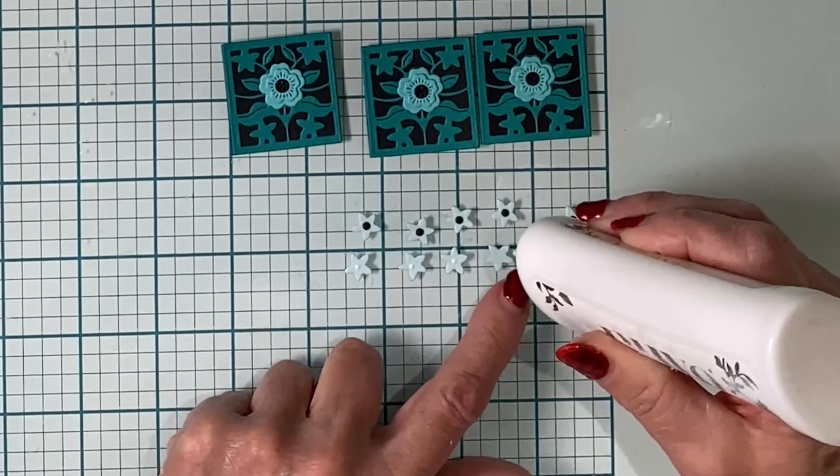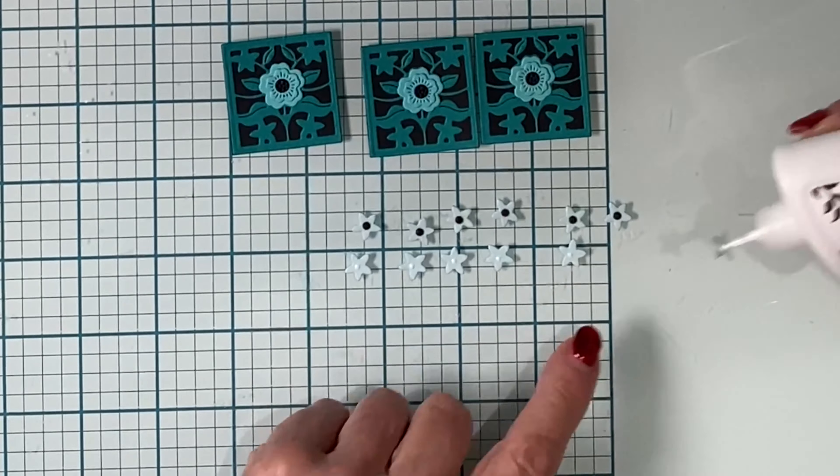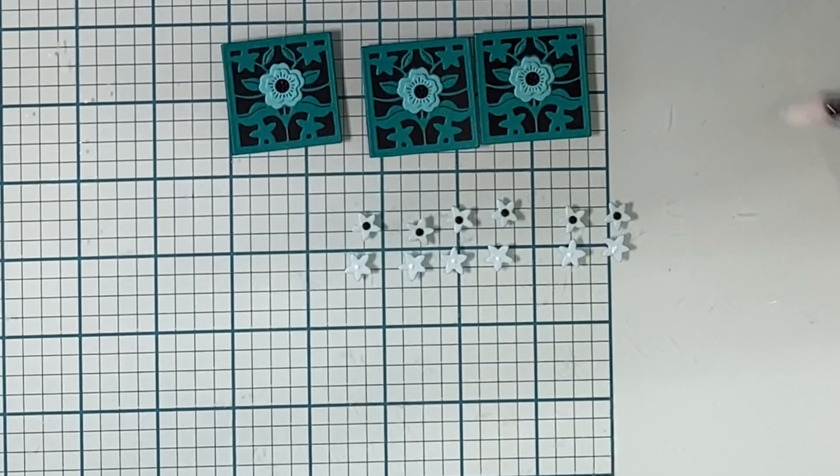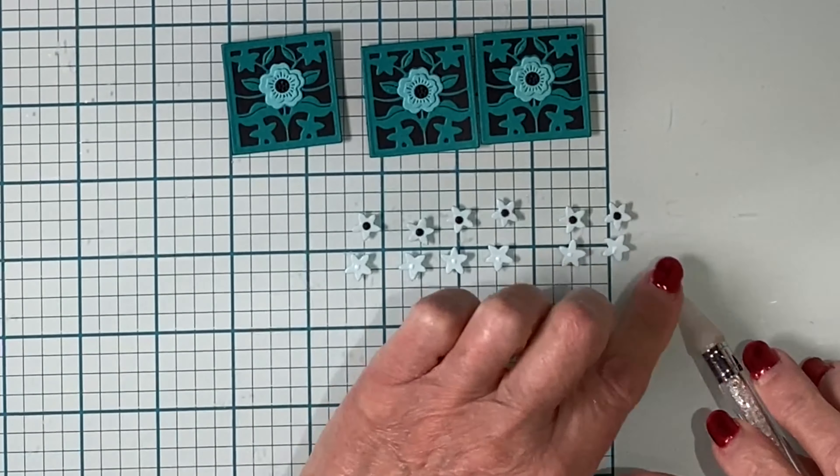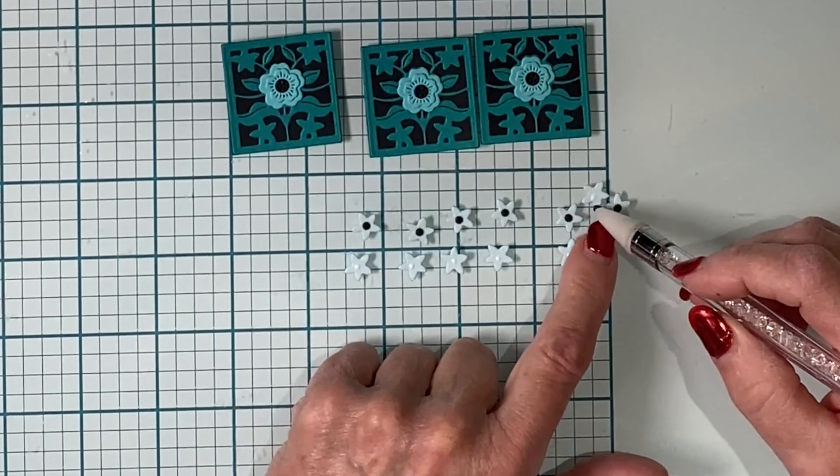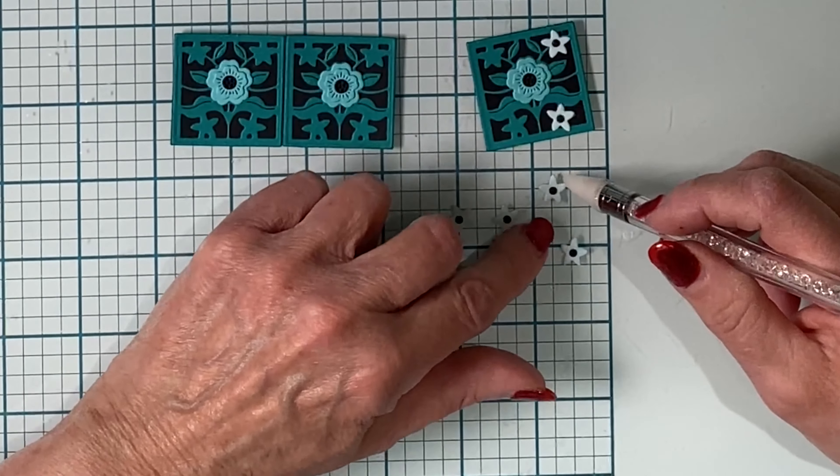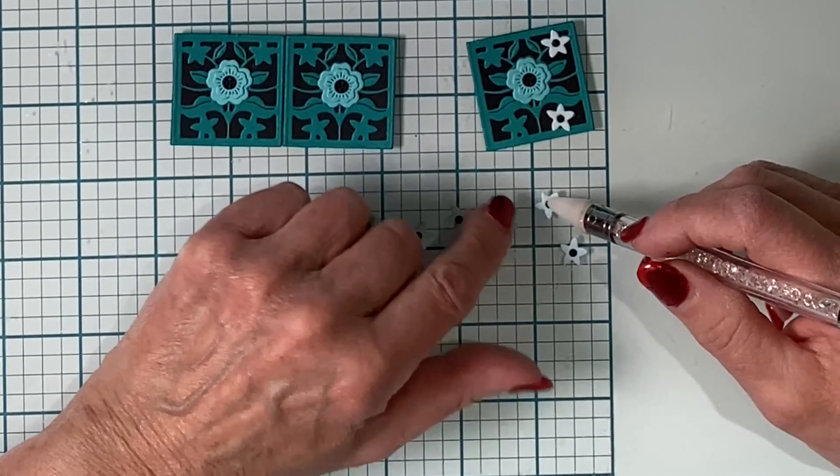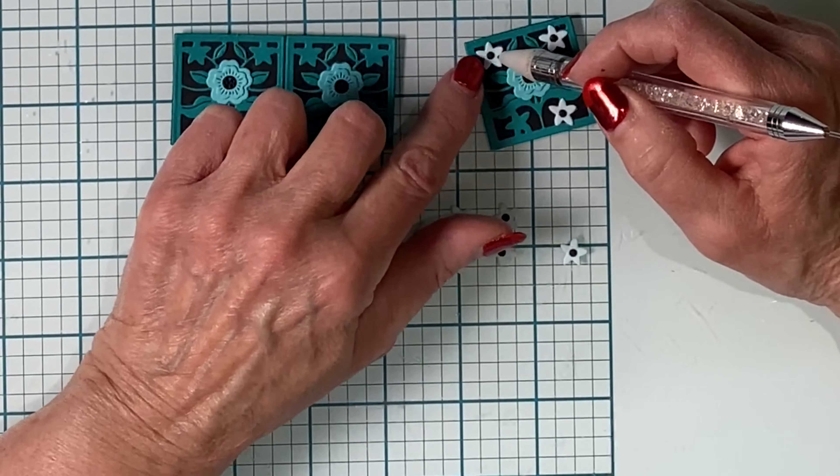As I'm putting on these little flower centers with my jewel picker, some of them I'm flipping over. The right side will be slightly domed. Okay, so now for the placement of these little flowers on the tiles.